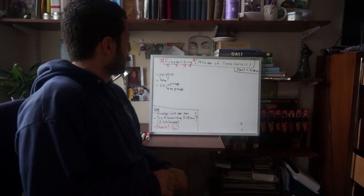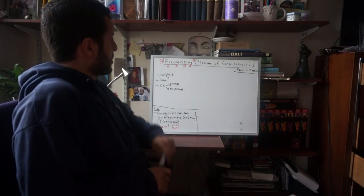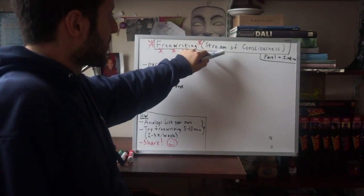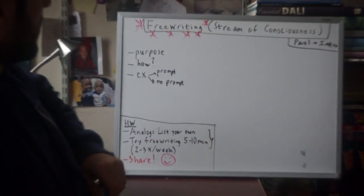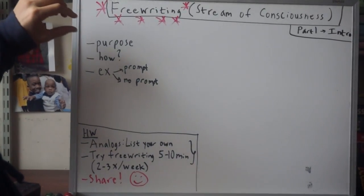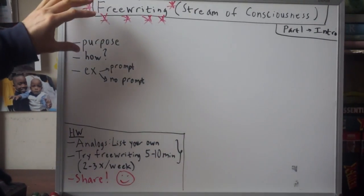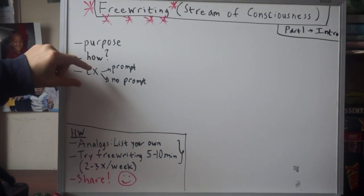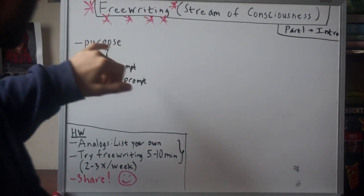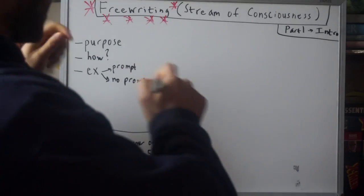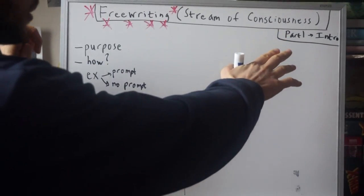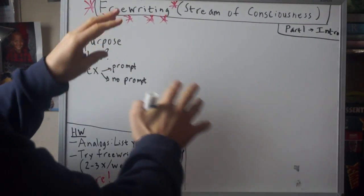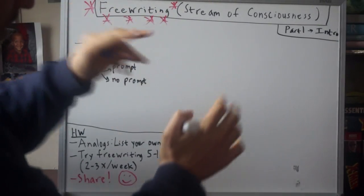Today we're going to go over one of my favorite exercises which is called free writing, also known as stream of consciousness. In this video we're going to go over what the purpose of this whole thing is, how you do it, what it is, and a quick example. There'll be two more videos, so if you're having trouble with this one, I encourage you to watch the next ones as well.